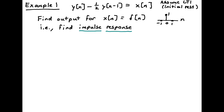For our first example, consider the system described by y of n minus one-half y of n minus 1 equals x of n. The constant coefficients are one, negative one-half, and one. We assume the system is initially at rest. We want to find the output when the input x of n equals delta of n, the unit impulse sequence — in other words, we're finding the impulse response of this LTI system.